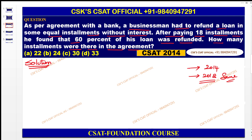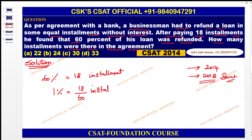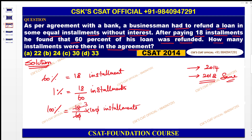Try to understand: 60 percent of the loan was refunded with 18 installments. So 60 percent equals 18 installments. Therefore 1 percent equals 18/60 installments. For 100 percent, it is (18/60) × 100. Cancelling the zeros and simplifying — 3 × 10 — gives 30 installments.